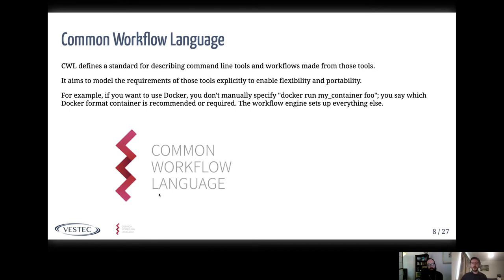Briefly, the Common Workflow Language is a set of standards for describing command line tools and connecting these descriptions together to form workflows — batch automated data processing workflows. One of the things CWL tries to do for portability is disconnect things so they can run on different systems. For example, instead of baking 'docker run my_container' into the command line, we model it as: there's this Docker container available, because the workflow engine might want to use Singularity or Docker or a different runtime. Since MPI doesn't have a fixed form, we need to have MPI modeled in the same way, but today the MPI need is not in the standards — which is why Rupert came to us.